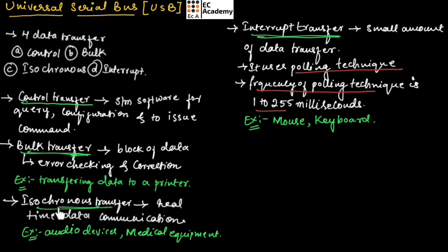Next is isochronous transfer. In isochronous transfer, data is transmitted as a stream in real time. Examples of isochronous transfer are audio devices and medical equipment where data communication is required in real time.